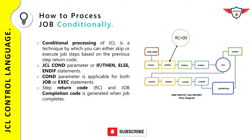If the step ends normally, the return code is 0; if it fails due to some problem, the value will be between 1 and 4095. Similarly, a job completion code is generated when a job completes. If the job ends normally, the completion code is 0. If the job fails, the completion code consists of a three-digit code with a prefix of S, which can also be called an abend code.